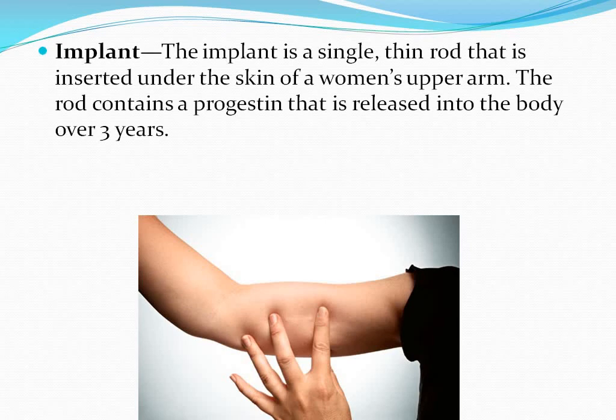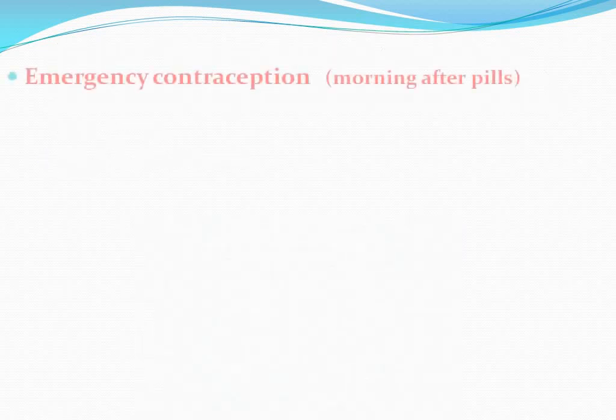Implant: The implant is a single thin rod that is inserted under the skin of a woman's upper arm. The rod contains progesterone that is released into the body over 3 years. It is 99% effective. Emergency contraception will be dealt with in the next class. Thank you very much.